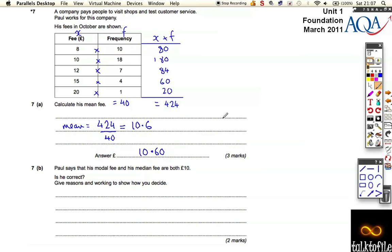So one mark for getting any of these calculations correct, one mark for adding them all up and finding 40, and then one mark for doing the correct calculation, which in this case is division, then coming up with the answer 10.6.